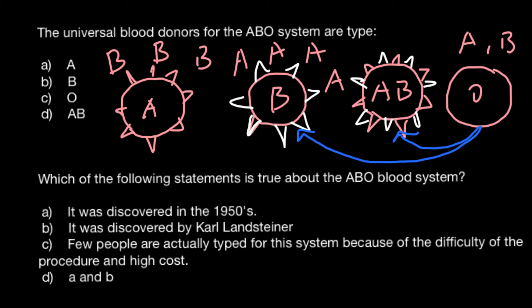Blood group O can also be transfused to people with blood group A. Blood group A has antibodies B in its serum, but since the red blood cells of blood group O don't have antigens A or B on the surface, this blood group can be safely transfused to people with blood group A.